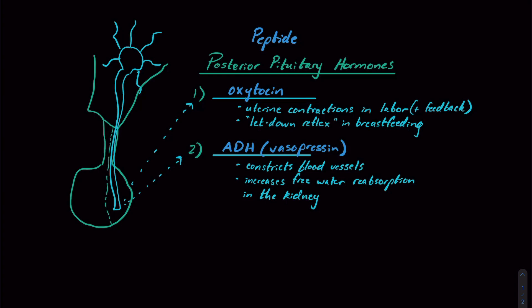Second, more high yield for the MCAT is that it's going to increase free water reabsorption in the kidney by mobilization of what we call aquaporins in the collecting duct of the kidney. So we're going to take water from the kidney tubule and bring it back into the blood.